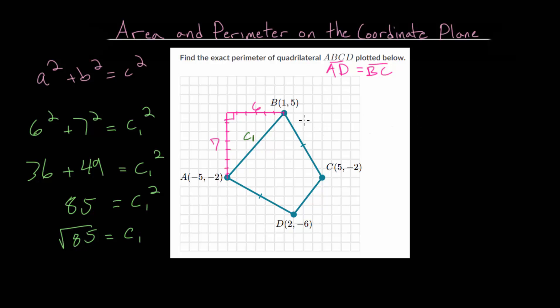Now let's find one of these side lengths. They're the same, but we need to find at least one of them. So let's call this c sub 2. And we're going to just draw triangles again. So we'll drop a vertical line and then a horizontal line.